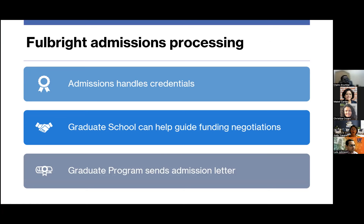Admissions handles all credentials. The Graduate School can assist if you're going to make a funding offer or cost-sharing arrangement — we can review your letters. Departments will network with the Fulbright agency regarding funding agreements, and the agency will share details about their contribution. LASPAU is very good about spelling it out at the beginning, while IIE tends to share during the funding negotiation. Departments then send the admission letter or release the admission decision with any letter of offer.